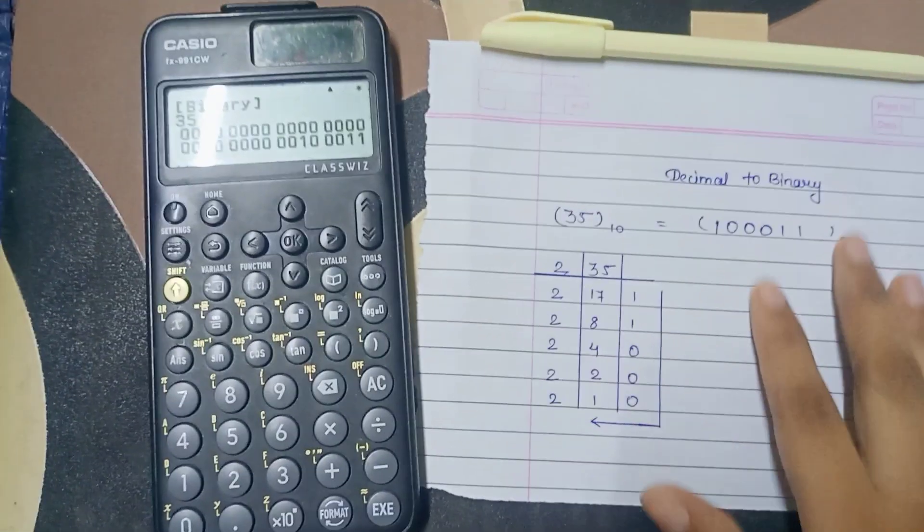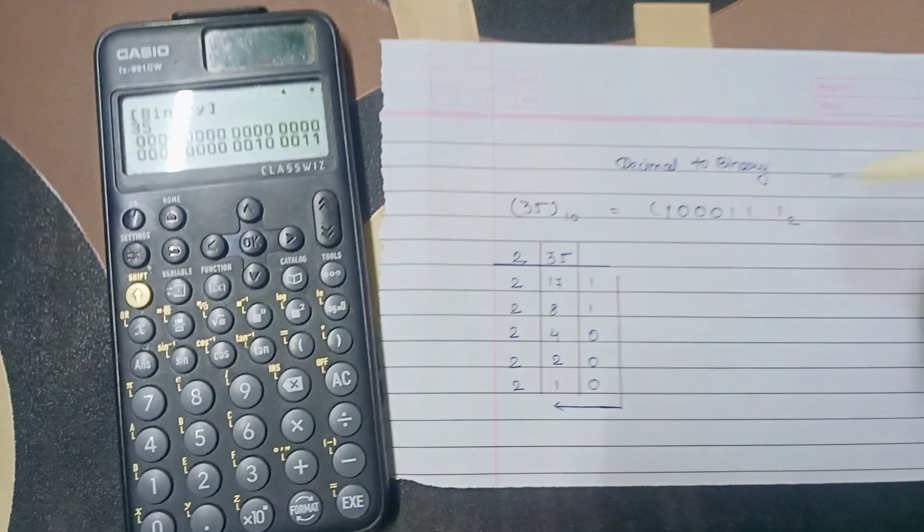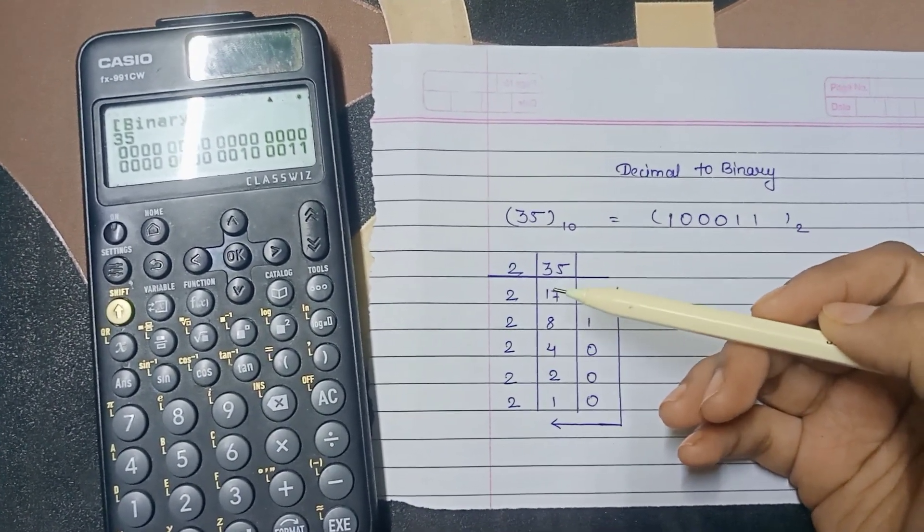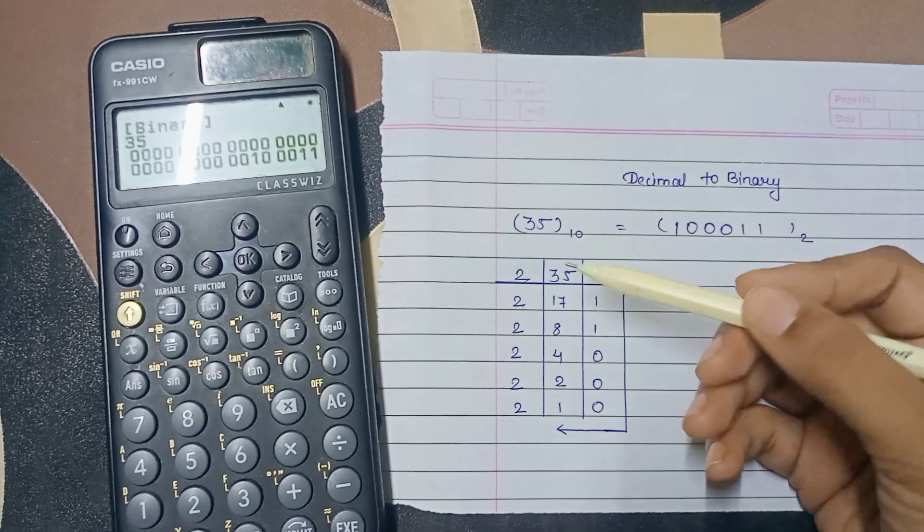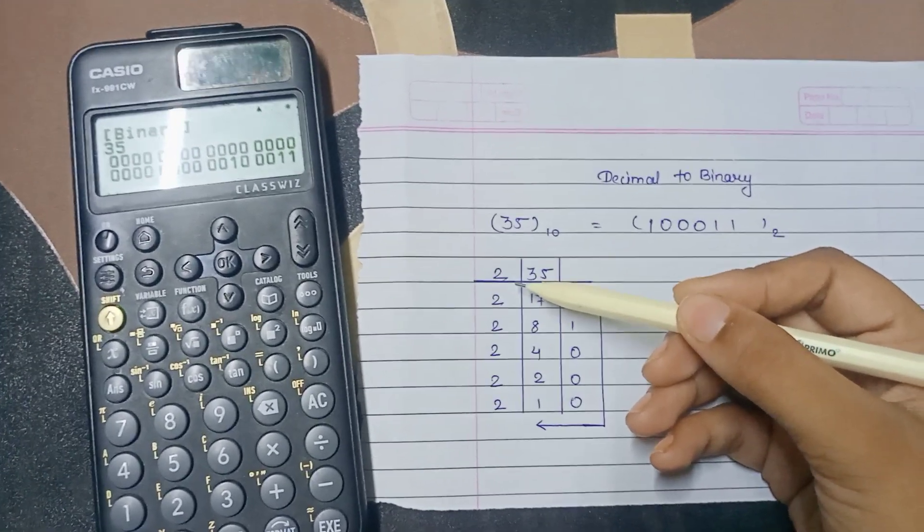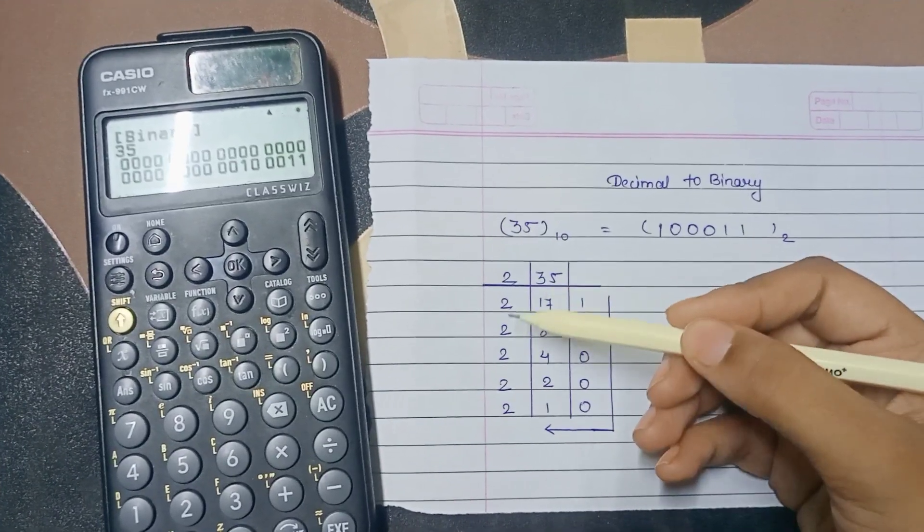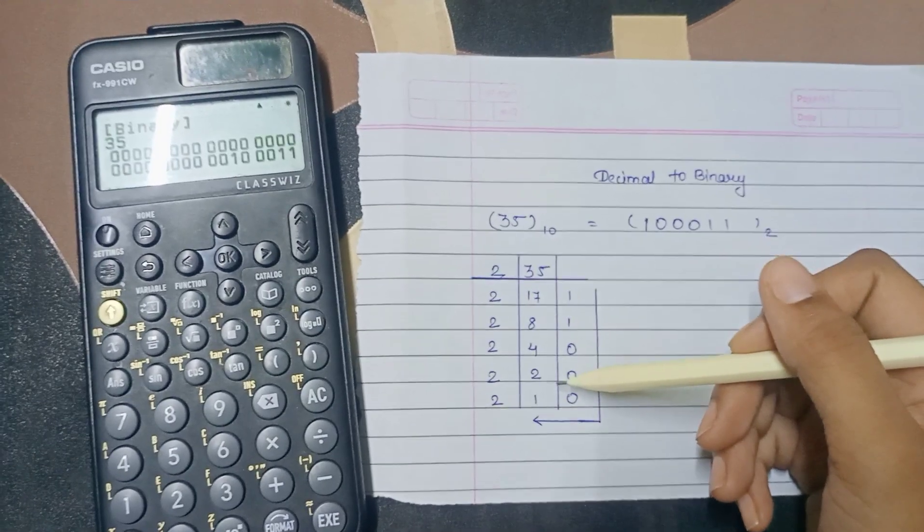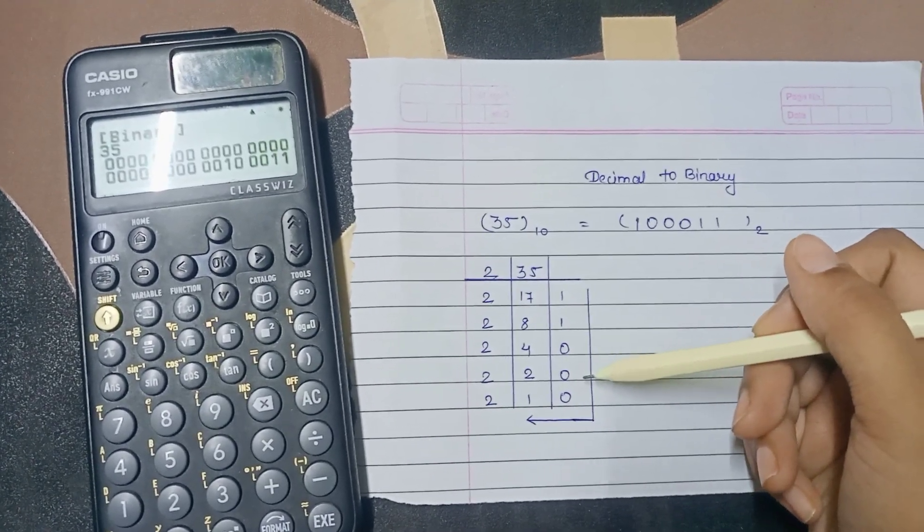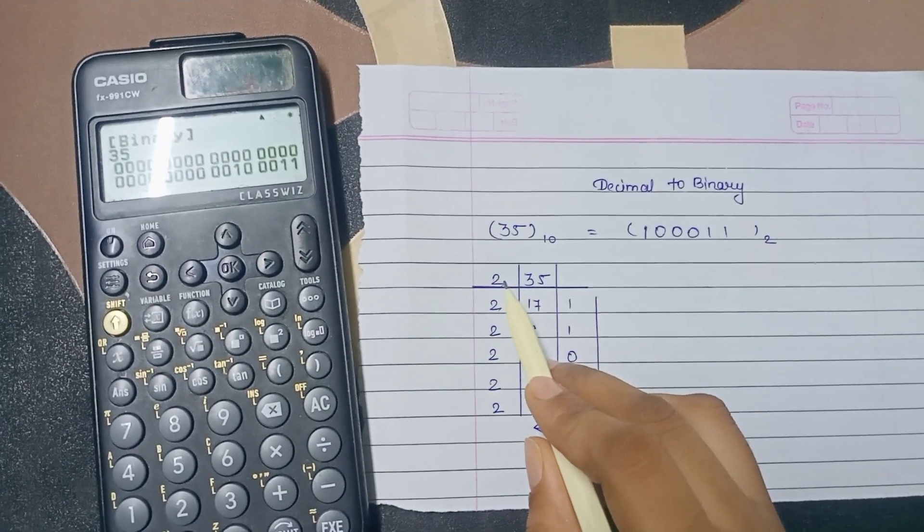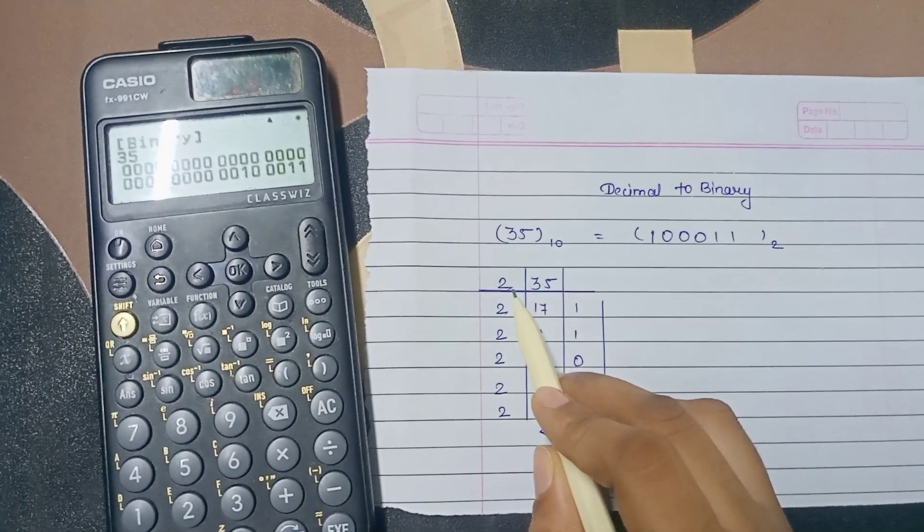Now this is the manual form to convert the decimal number into the binary number. For this you have to divide the number by 2 till you get remainder as 1 or 0 at the last. So 35 divided by